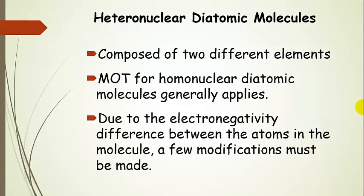And these are molecules that are composed of two different elements. So the homonuclear diatomic molecules that we just talked about, those are composed of the same element. These can be two different elements. Now, all of the rules and procedures for the molecular orbital theory for homonuclear diatomics, all of that generally applies also to heteronuclear diatomic molecules.